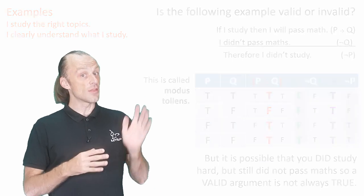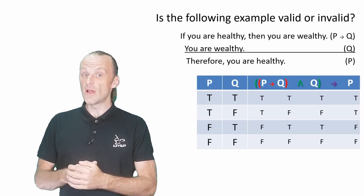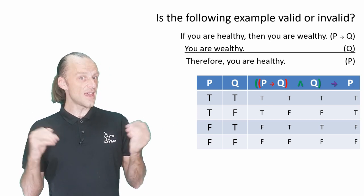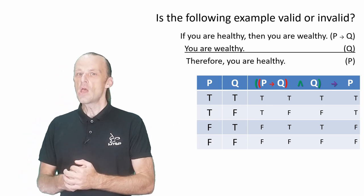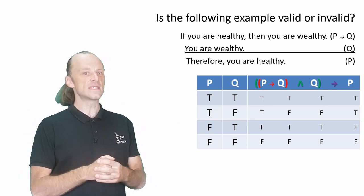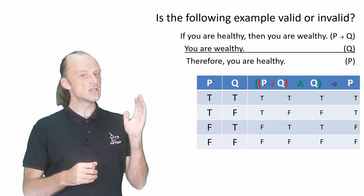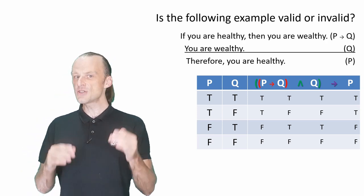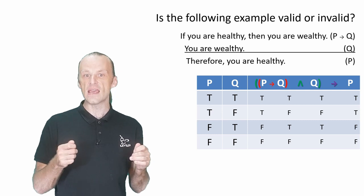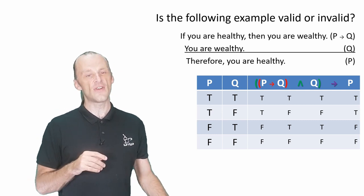How about this one? If you are healthy, then you are wealthy. You are wealthy, therefore you are healthy. Although it might seem very similar to modus ponens, it is not the same. Premise two is Q instead of P, and this is why the argument fails.